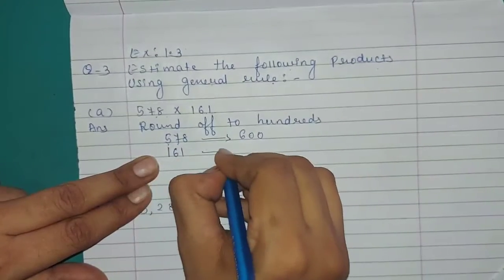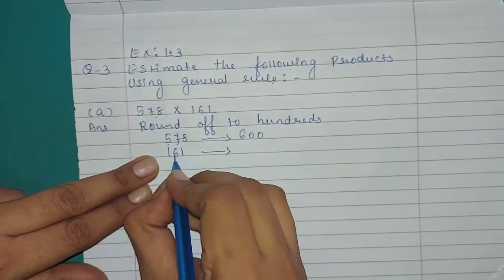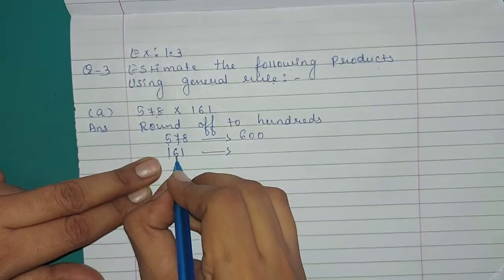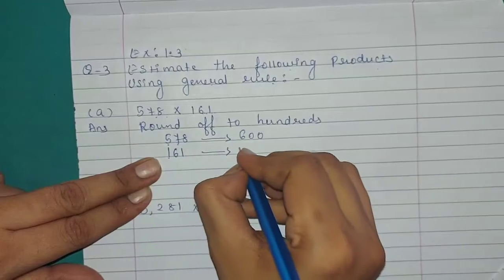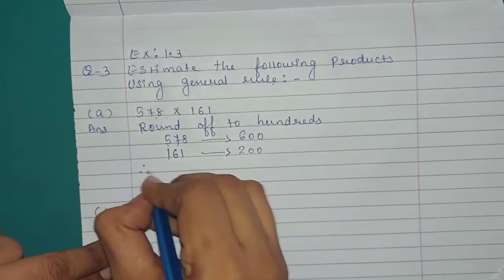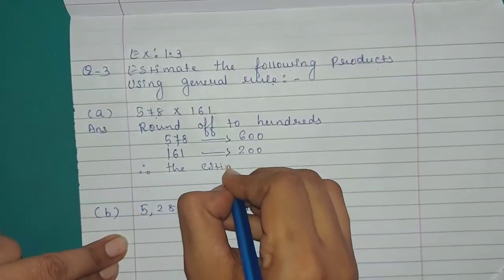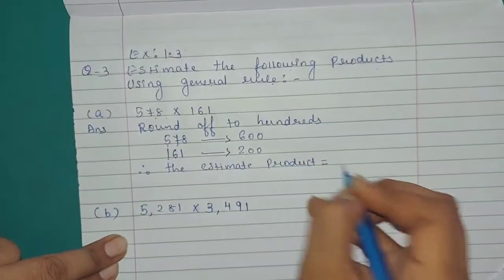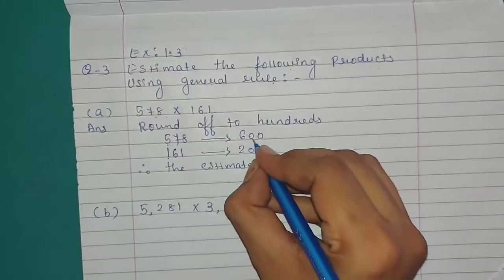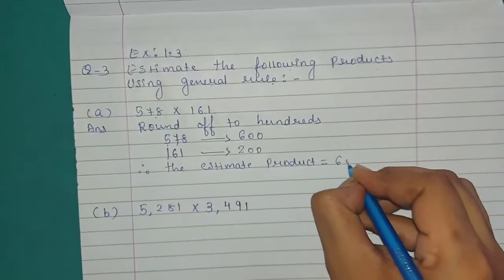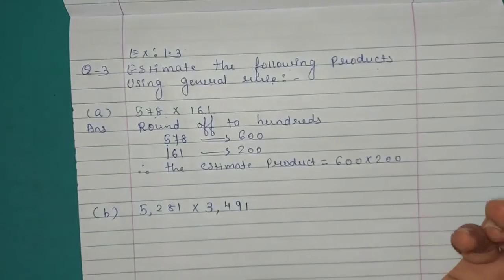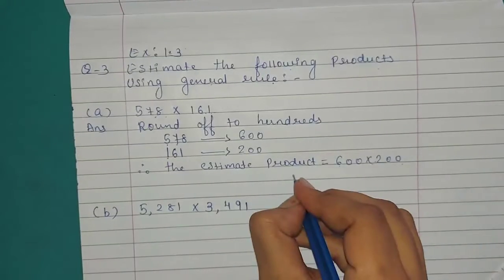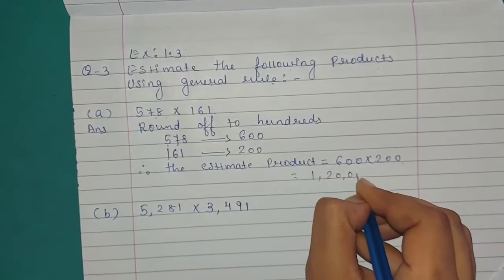The next number is 161. The hundreds place value is 1. The digit next to 1 is 6, which is greater than 5, so we add 1 and the answer is 200. Therefore, the estimated product equals 600 multiplied by 200. Multiplying 6 by 2 gives 12, and we write 4 zeros. So the answer is 1,20,000.